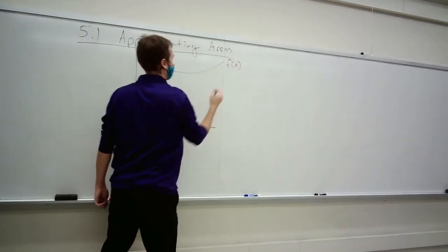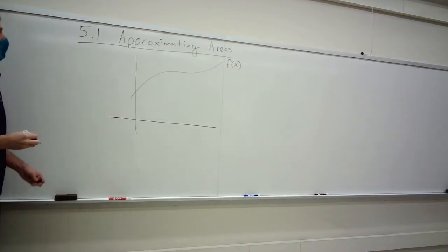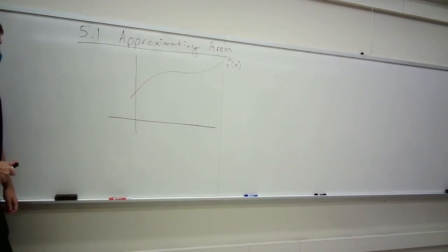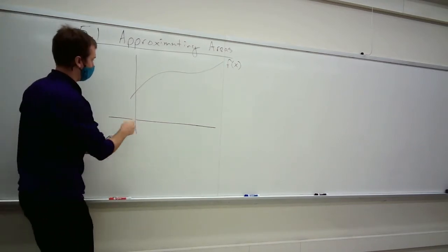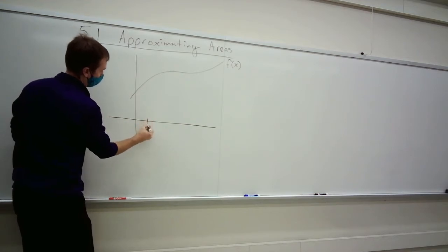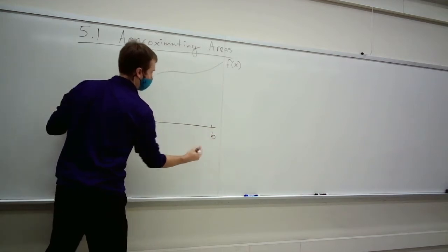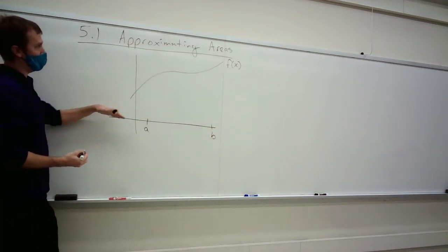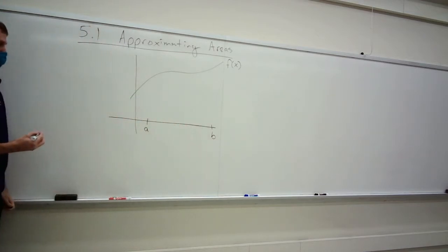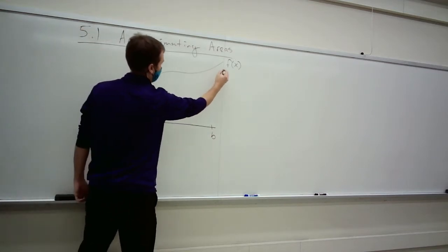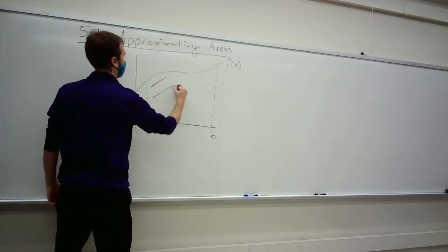If I draw any function f(x) — something where you can find the height given any x value — and I ask you to compute the area from some starting number a to some end value b in the domain, between the function itself and the x-axis, that area would look something like all of this in here.